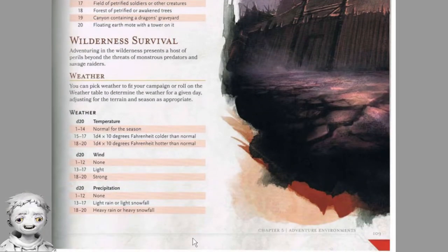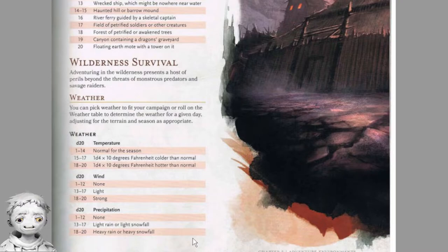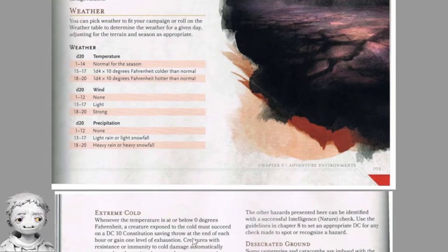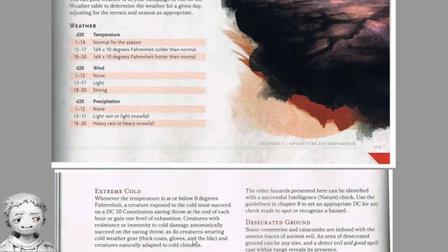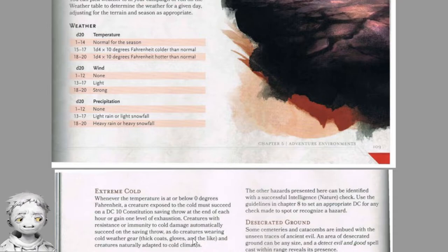Wilderness survival: adventuring in the wilderness presents perils beyond monstrous predators and raiders. Weather: you can pick weather to fit the campaign or roll on the weather table. The D20 temperature table gives: 1–14 normal for the season; 15–17, 1d4 × 10 degrees Fahrenheit colder than normal; 18–20, 1d4 × 10 degrees hotter than normal. Wind: 1–12 none, 13–17 light, 18–20 strong. Precipitation: 1–12 none, 13–17 light rain or light snowfall, 18–20 heavy rain or heavy snowfall.